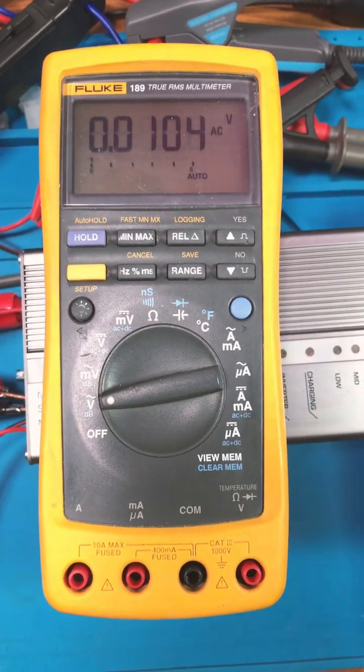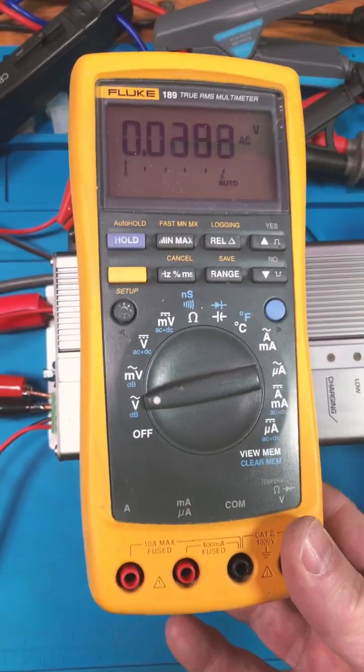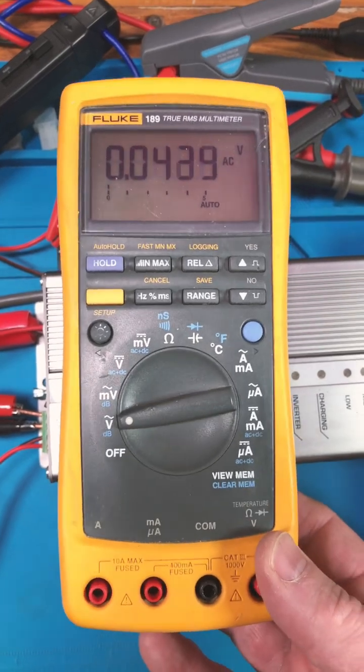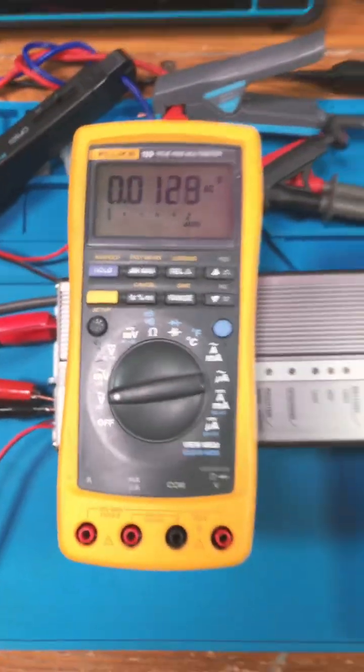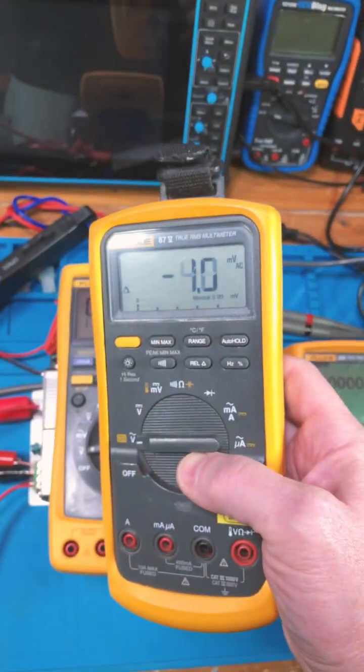The Fluke 189, the best multimeter they made in my humble opinion, should have replaced the Fluke 87, which they even said it had many more features.